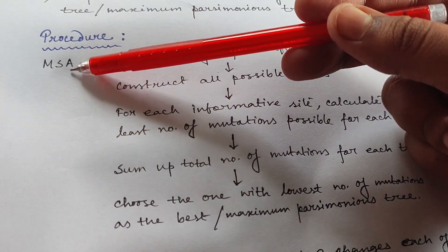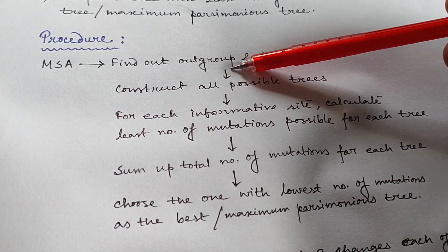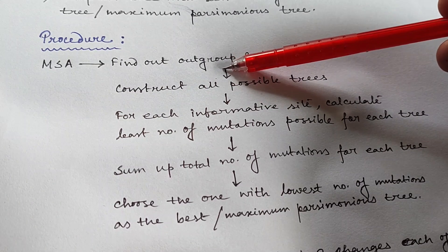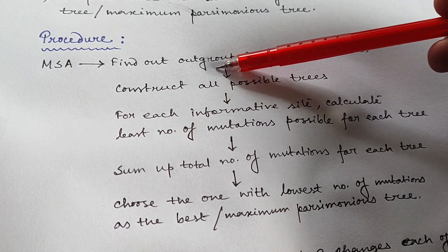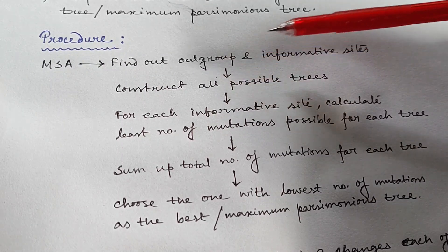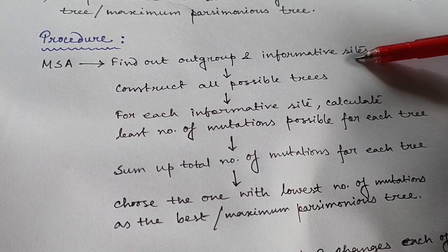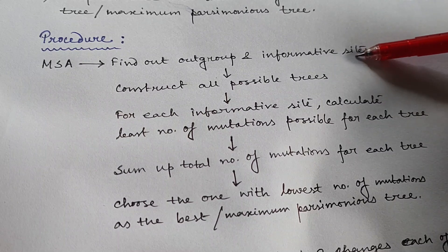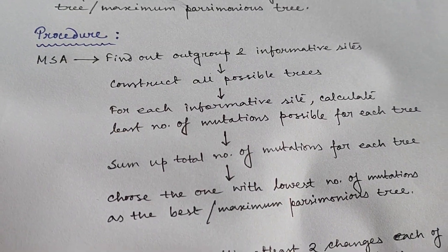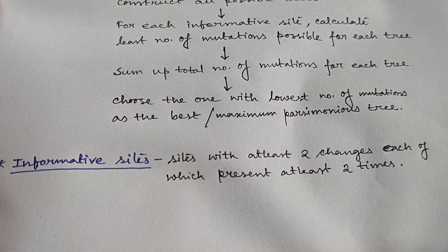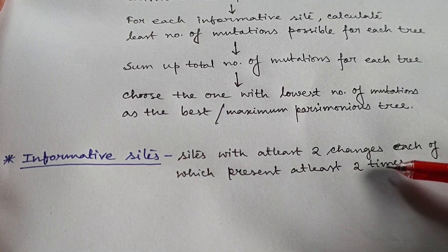If you are given an MSA sequence file or matrix, you first need to find out the outgroup in that matrix. The outgroup is the most ancestral taxon — the most ancestral sequence which looks different from all others. Next, you have to find the informative sites. Informative sites are those sites which have at least two changes, and each of those changes occurs at least two times.